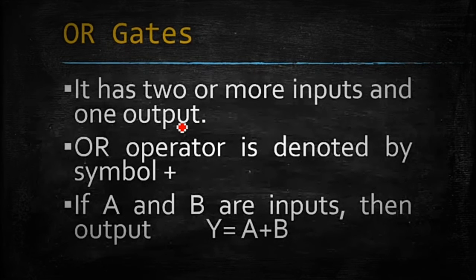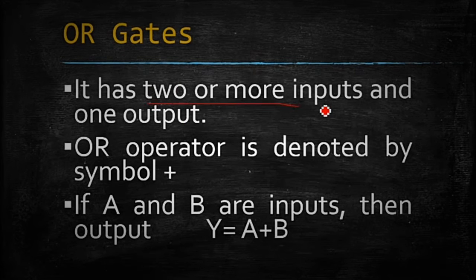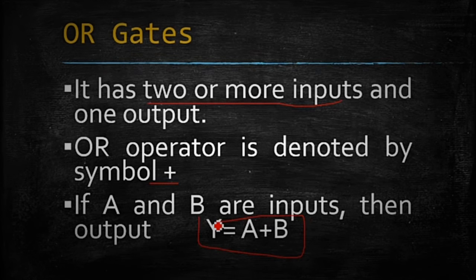OR gate. It has two or more inputs and one output. OR operator is denoted by plus sign and its denotation is Y equals A plus B.